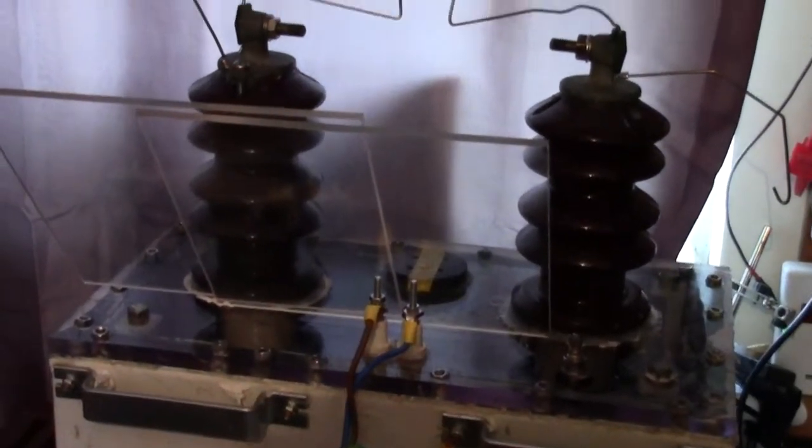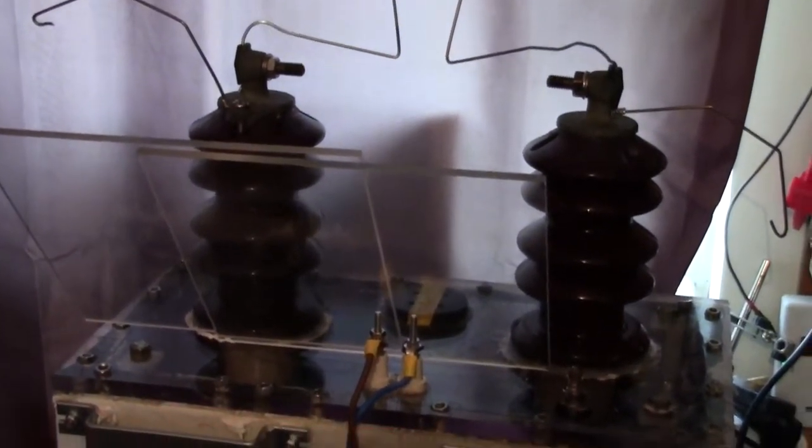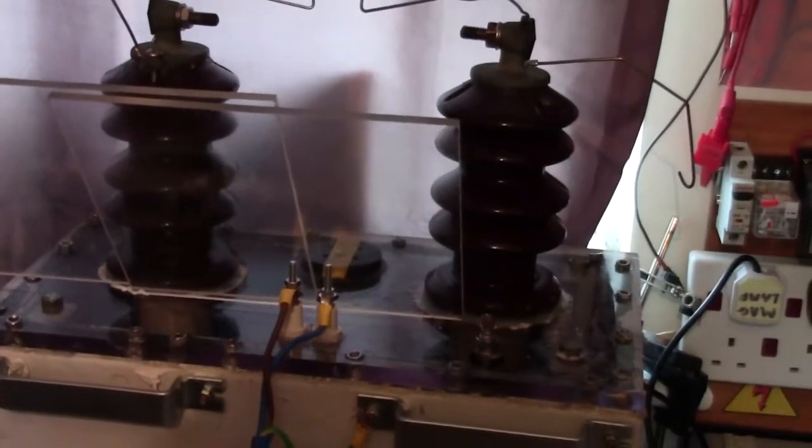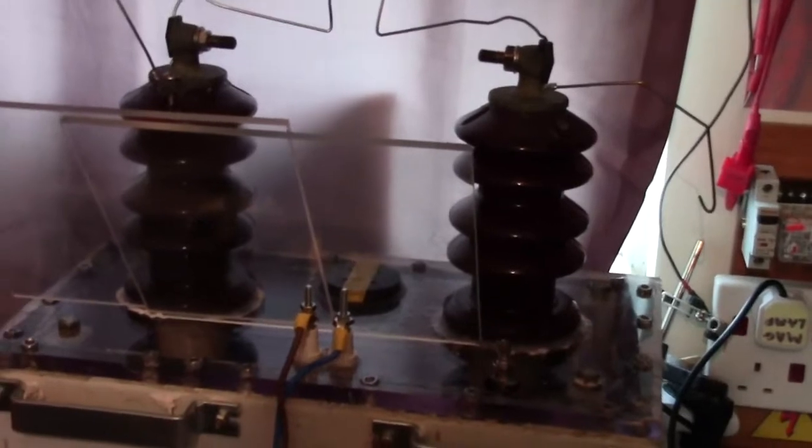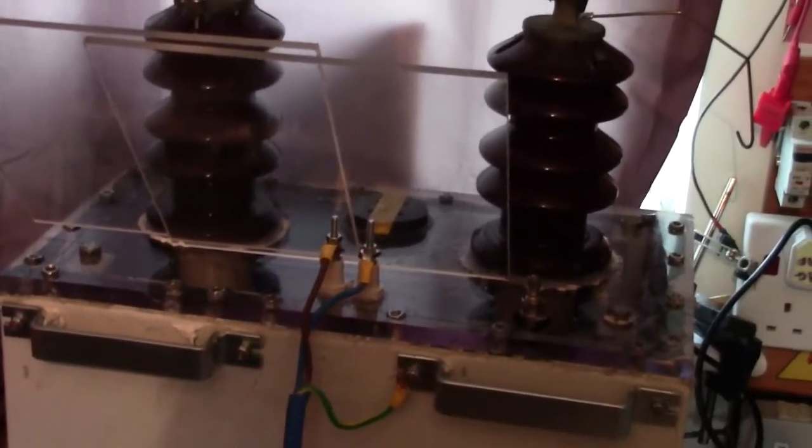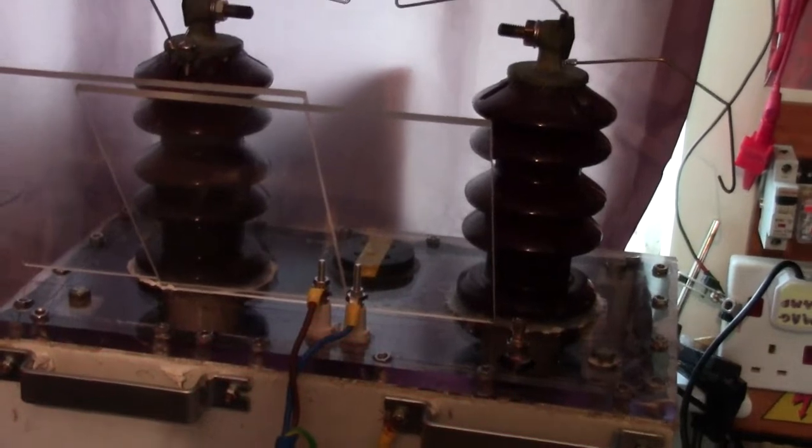Right now I've had to put those bits of perspex up there because it's still trying to jump to live. So basically what I'm going to end up having to do is put a shield in. I'll just make a little perspex box to go for the top of the inputs.